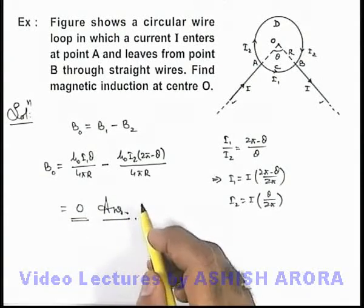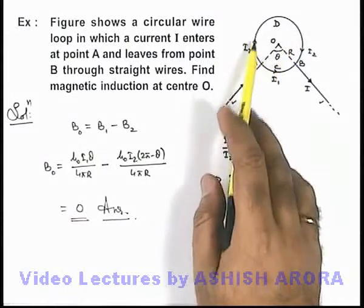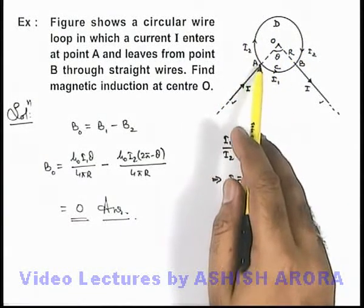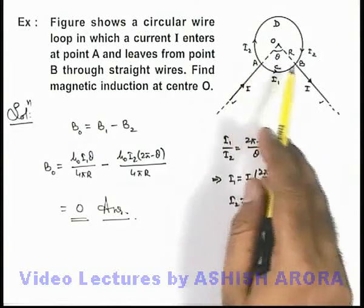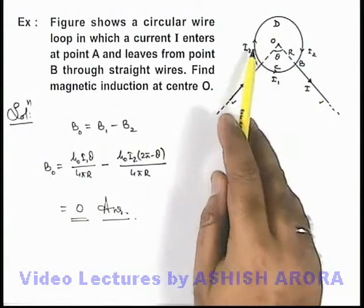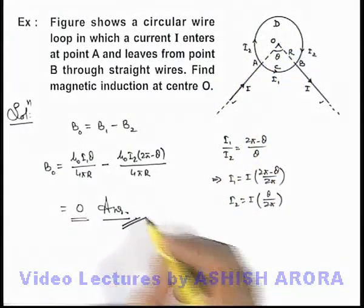And in such situation you can always keep in mind that whenever there is a circular coil or a symmetric polygon in which at one vertex or one end a current is entering and leaving from the other point then due to the current distribution in the circle or polygon then always the magnetic induction at the center is zero.